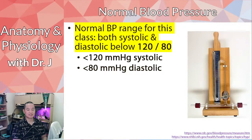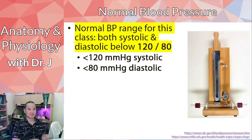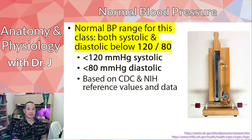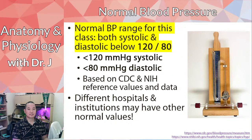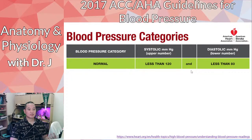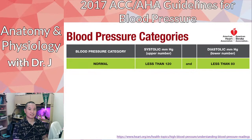Normal blood pressure requires both numbers to be below their thresholds: less than 120 systolic and less than 80 diastolic. A common misconception is treating it like a fraction and dividing — it's not math. The slash just separates systolic from diastolic. Systolic is always listed first. These values come from CDC and NIH data, and align with American College of Cardiology and American Heart Association guidelines.